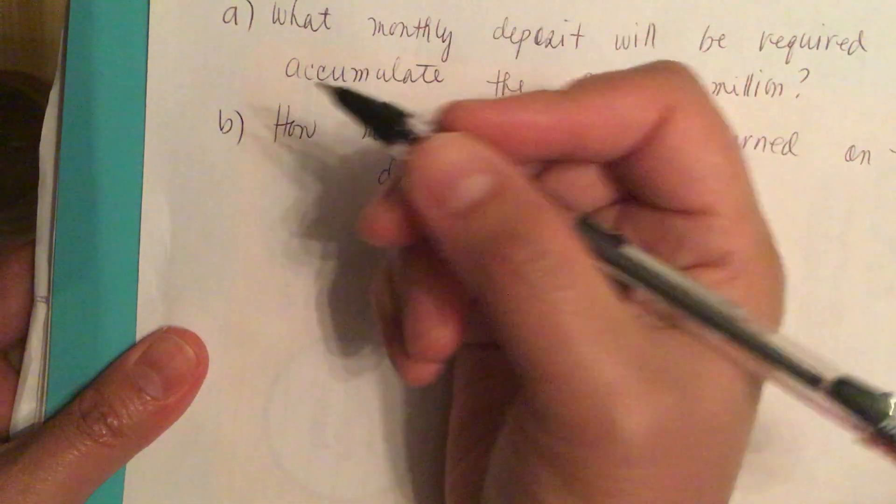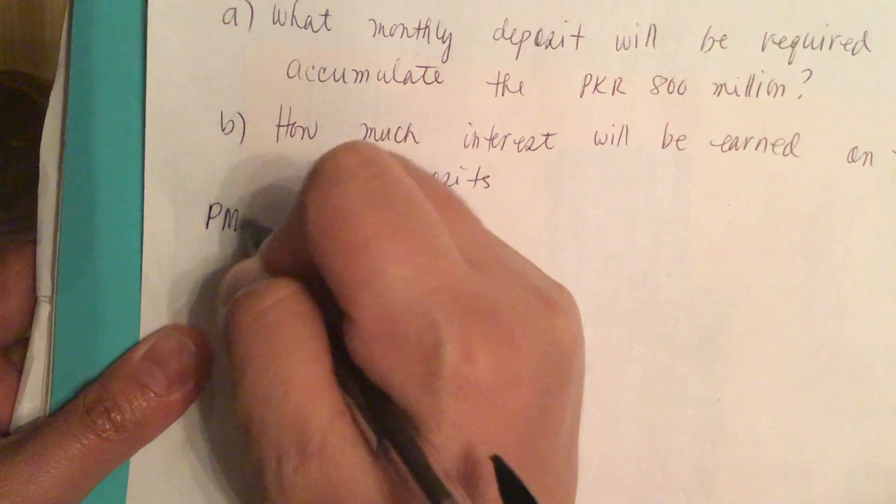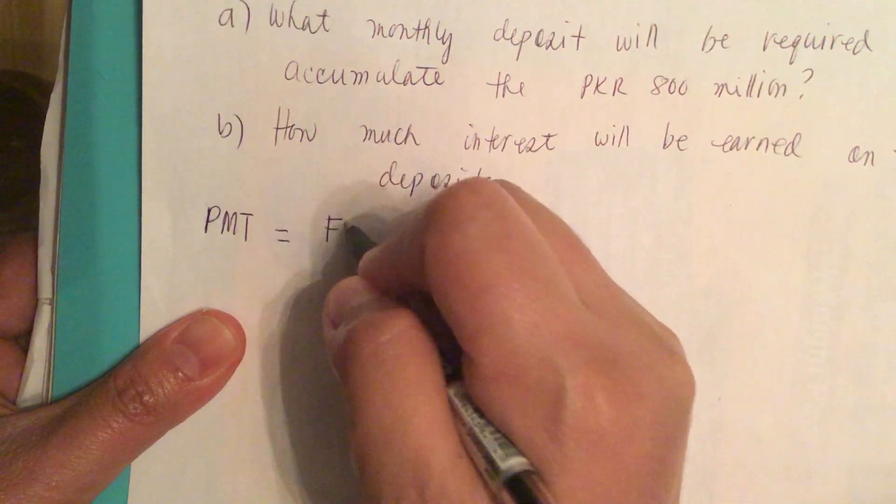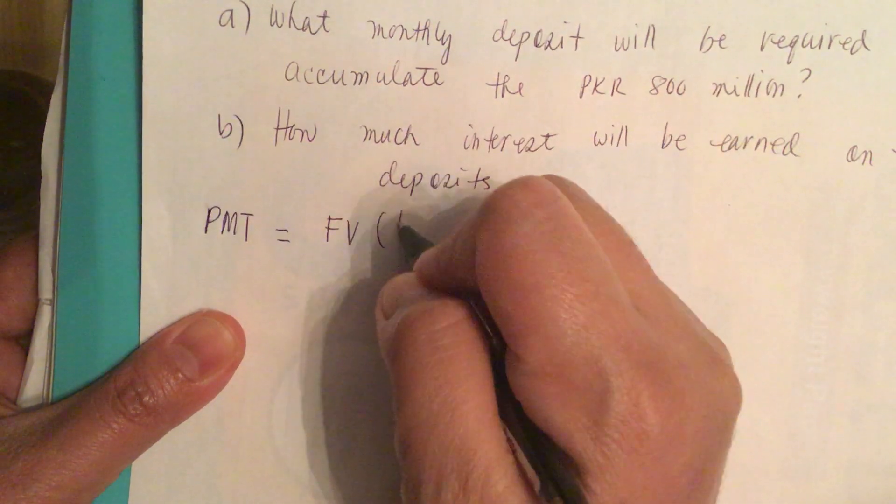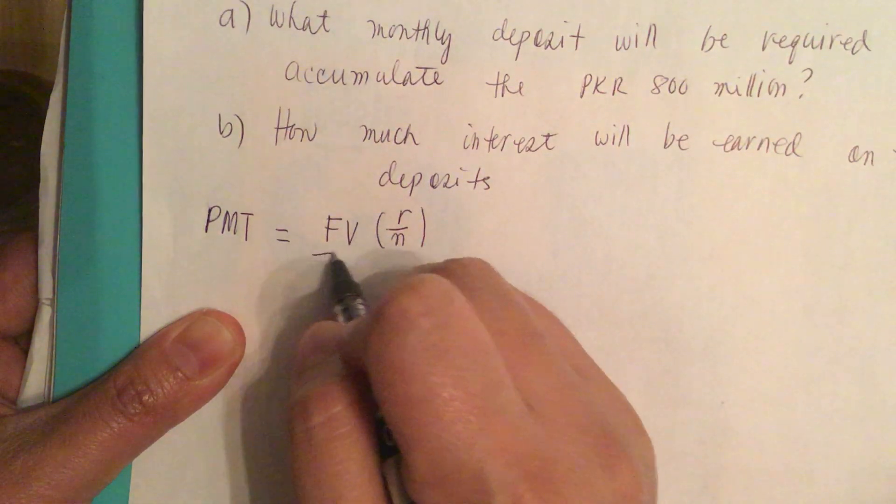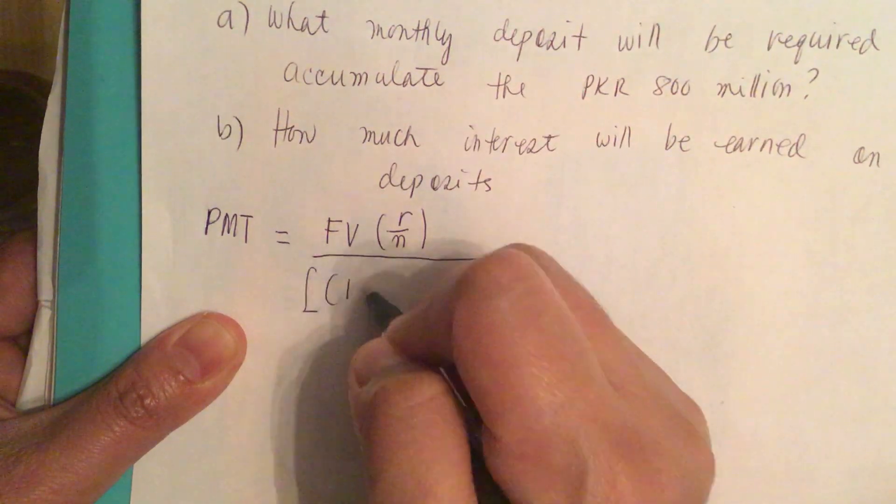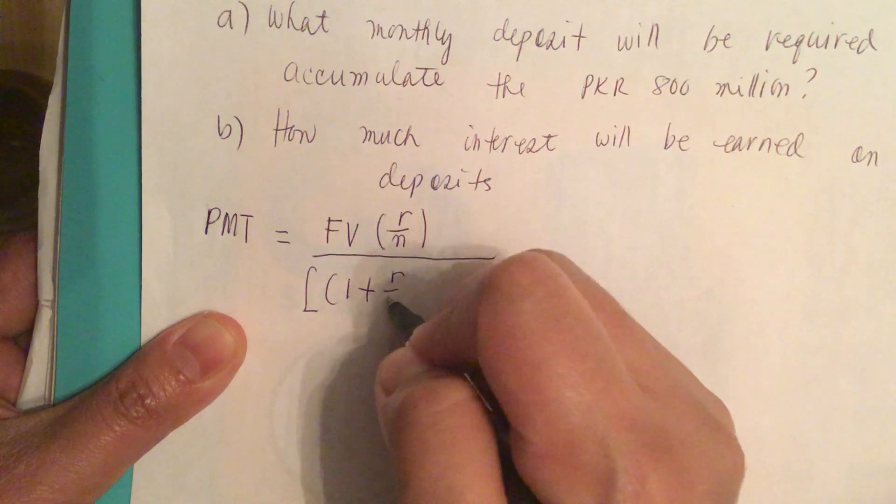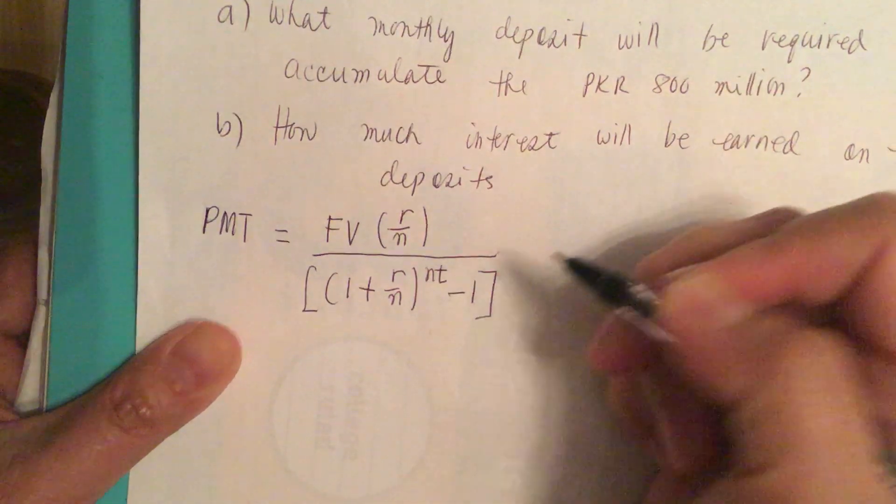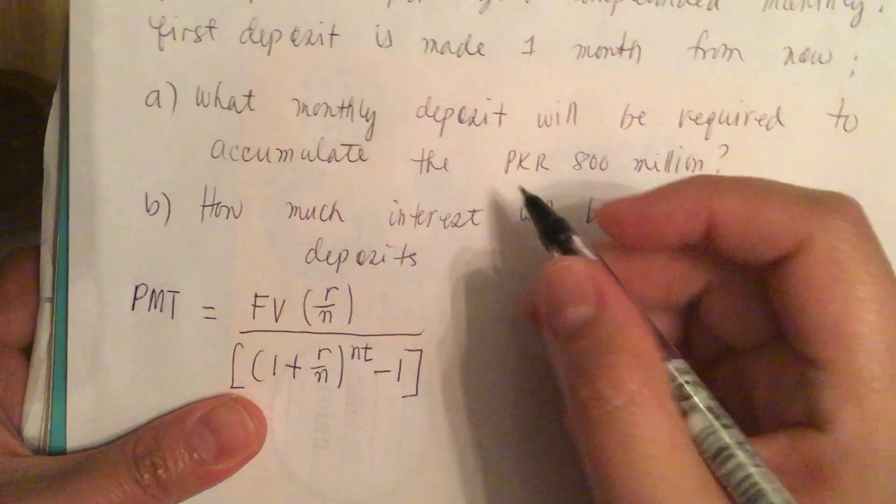The formula for annuity monthly deposit is that PMT or the monthly payment is equal to the future value times the rate over n, the number of compounding per year, and this is divided by (1 + r/n)^(nt) - 1.